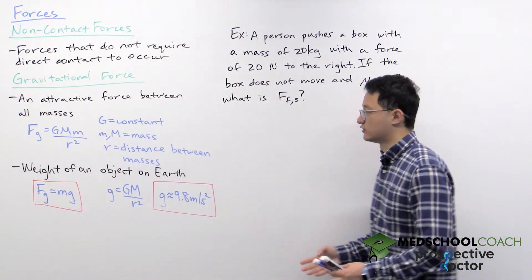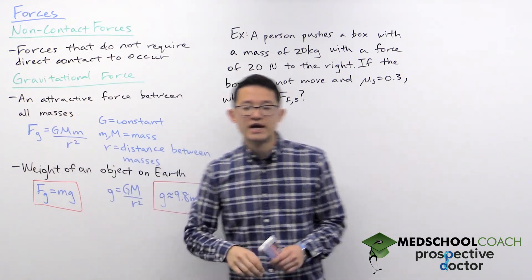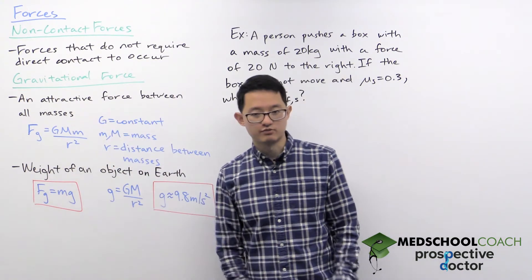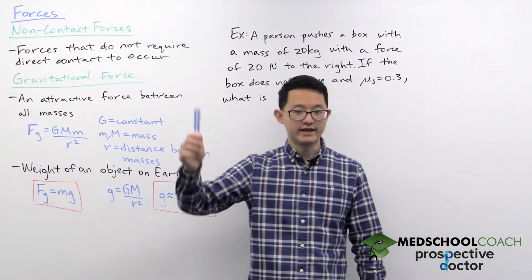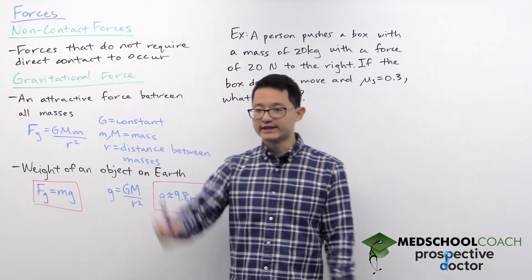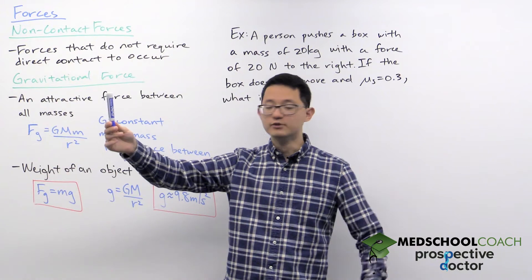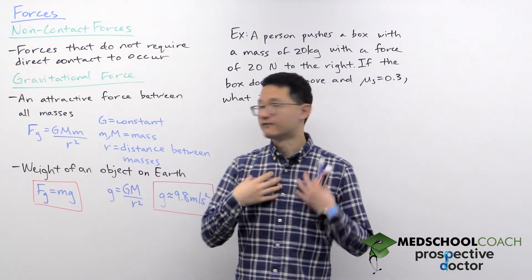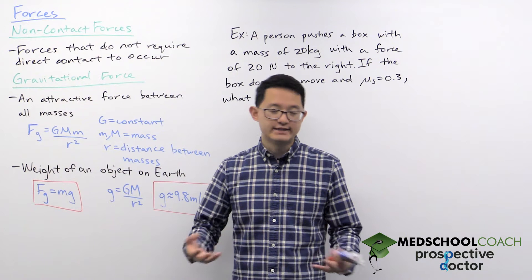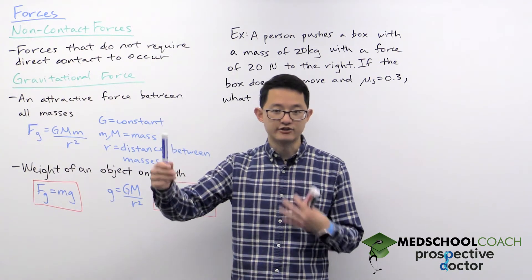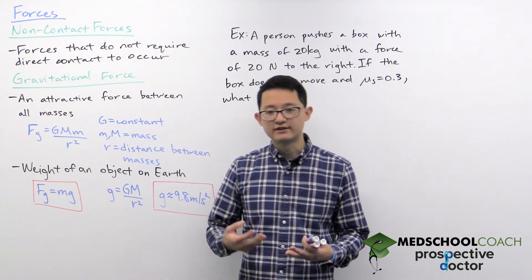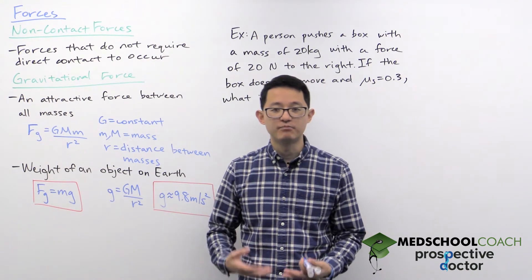So what is the gravitational force? By definition, it's an attractive force between objects with mass — and it's between all masses. I have a mass, this marker has a mass, this whiteboard has a mass, and it's an attractive force between all of them. However, you don't see this marker moving towards me by itself, or myself gravitating towards the whiteboard. It's not that there isn't a gravitational force between these masses — there are gravitational forces. However, these forces are so weak that they're negligible; we can't even perceive them.